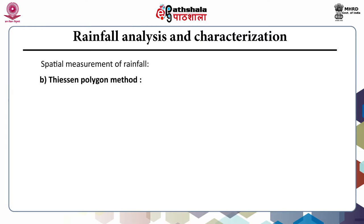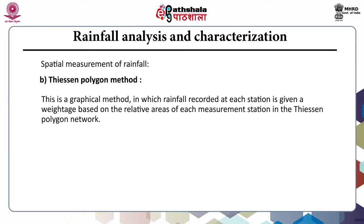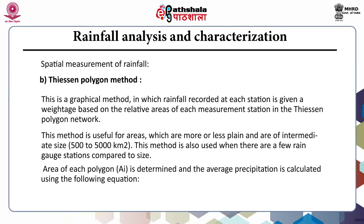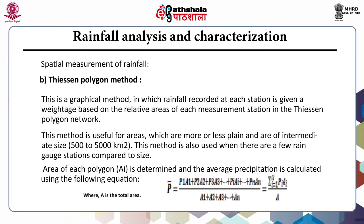The Thiessen polygon method is a graphical method in which rainfall recorded at each station is given a weightage based on the relative areas of each measurement station in the Thiessen polygon network. The individual weights are multiplied by the station observation and the values are summed to obtain the average precipitation. This method is useful for areas which are more or less plain and are of intermediate size, that is from 500 to 5000 km². It is also used when there are few rain gauge stations compared to the size of the area. The average precipitation is P̄ = (P1A1 + P2A2 + ... + PNAN) / (A1 + A2 + ... + AN) = Σ(i=1 to N) PiAi / A, where A is the total area.